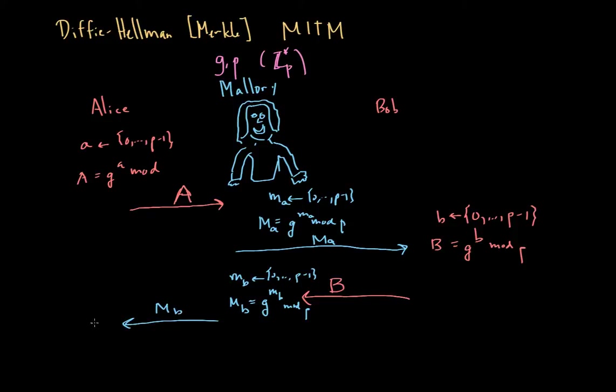Now, what is Alice going to compute? Well, Alice sees, remember the way that Alice works is she sees M_b, and she's going to compute, she's not going to know that she's receiving M_b, for all she knows, she's getting a value B back from Bob. She has no idea that it's been modified by Mallory. And so Alice will go ahead, and she's going to simply compute this value, she's going to take M_b and raise to the a power, so she's going to compute M_b to the a, which in this case is equal to, and remember, M_b was G to the lowercase m_b, so G to the lowercase m_b raised to the a power, so we multiply the exponents, so G to the m_b times a mod P, and that's her version of the shared secret.